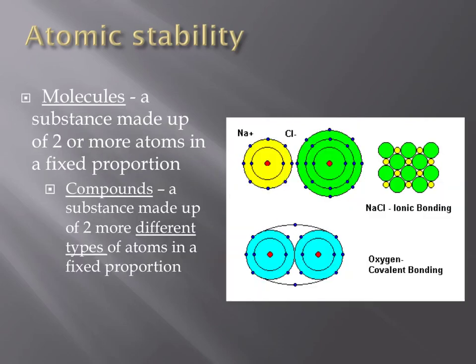When two or more atoms join up, they form what are called molecules. Examples of molecules would include NaCl, or table salt, and O2, or oxygen gas, because they both consist of two or more atoms, and they're always in fixed proportions. NaCl, for example, is always one part sodium atom and one part chlorine atom. Compounds are molecules that have two or more different types of atoms, or two or more different elements in fixed proportions. All compounds are molecules, but not all molecules are compounds. NaCl would be an example of a compound, since it has two different types of atoms, sodium and chlorine. While oxygen gas would be an example of a molecule, but not of a compound, because they are both the same type of atom, oxygen.